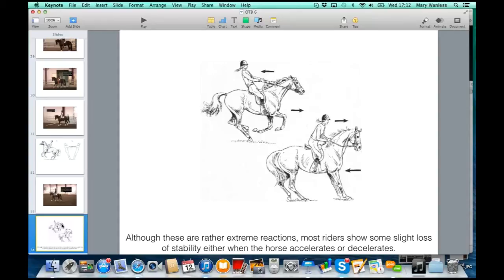Even in a normal halt to walk transition, you are asking the horse to accelerate. In that asking the horse to accelerate, you may well lean back and cause him to lengthen his underneath, go against the rein and brace and hollow.